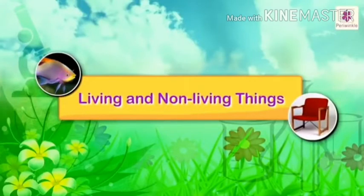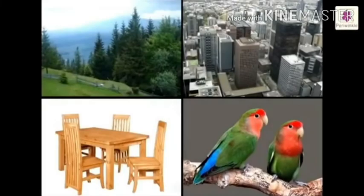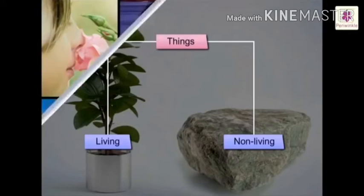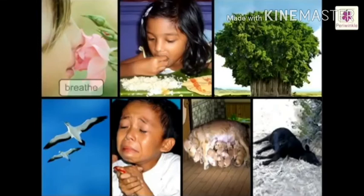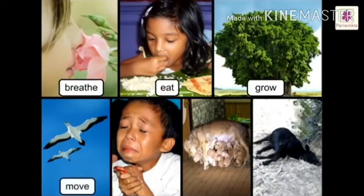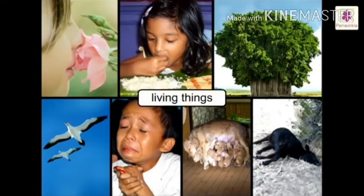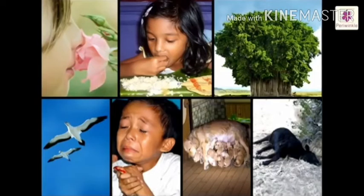All things which are present in this world can be classified into living and non-living things. Things that can live, breathe, eat, grow, move from one place to another, have feelings, reproduce young ones, and die are called living things.